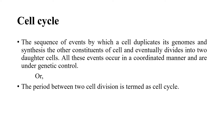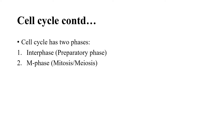In the cell cycle, all genomes, cells, and organelles duplicate into two daughter cells in a coordinated manner. Genetic control is under cell division. The cell cycle has two main phases: first is interphase, and second is M phase. Interphase is a preparatory phase, and M phase is mitosis or meiosis.